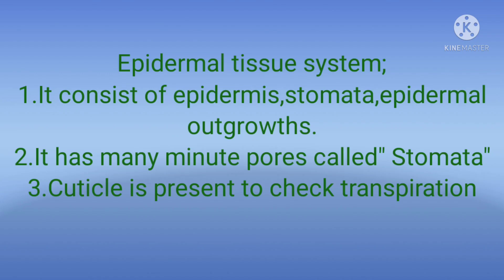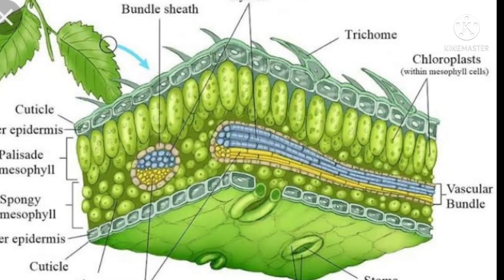We will see the epidermal tissue system. Here is a picture of a plant. Cuticle is a waxy substance present on the leaf and stem. This is a trichome. This is an epidermal tissue system. Stomata is a part of the epidermal tissue system and helps in transpiration.